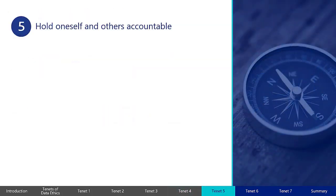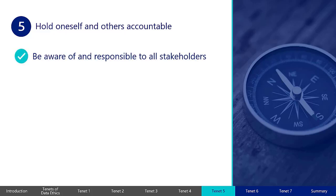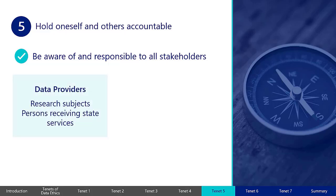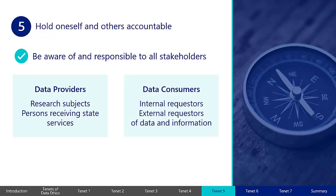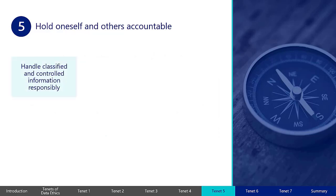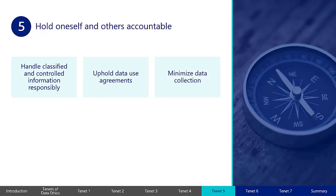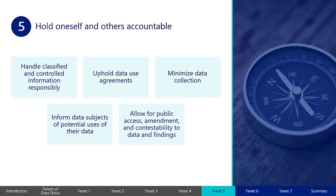The fifth tenet of data ethics is to hold oneself and others accountable. Accountability requires that anyone working with or using data at any point in the data lifecycle be aware of and responsible to any and all stakeholders. Stakeholders may include data providers such as research subjects or persons receiving state-provided services, or data consumers such as internal or external customers requesting data and information. Accountability includes the responsible handling of classified and controlled information, upholding data use agreements made with data providers and consumers, minimizing data collection, informing individuals and organizations of the potential uses of their data, and allowing for public access, amendment, and contestability to data and findings where appropriate.